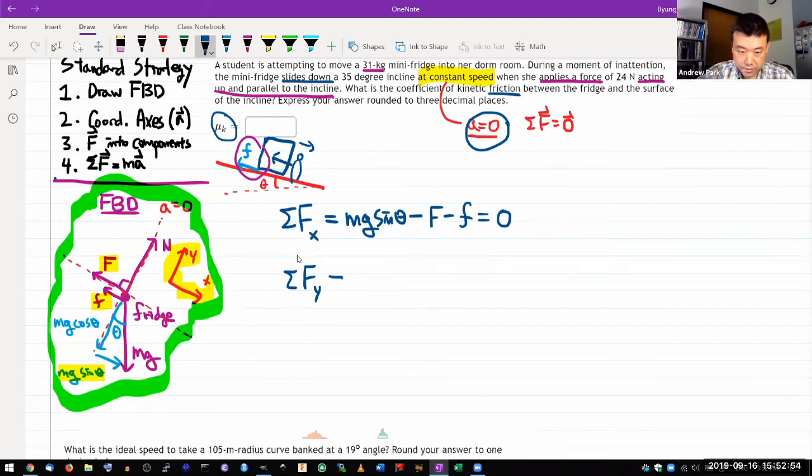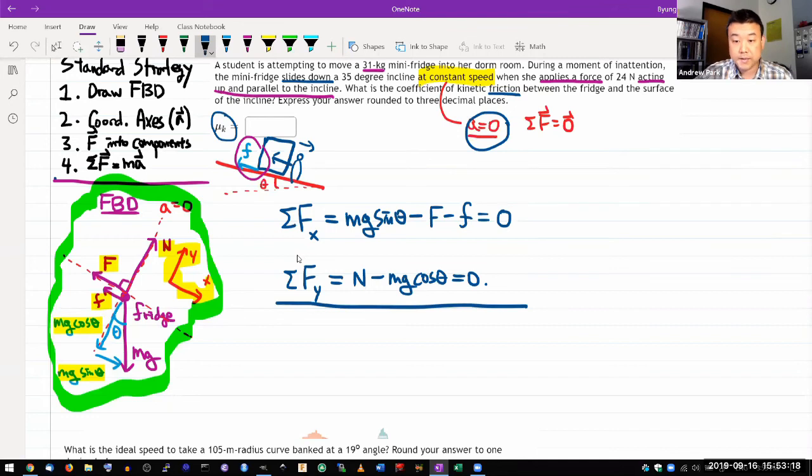Net force in the Y direction. I have two forces here - the normal force and the Y component of gravity. So normal force is positive, and minus mg cosine theta is equal to zero. That's the end of step number four. And as usual, I always count my equations and my unknowns. It's good to identify early on if I have all the necessary information.